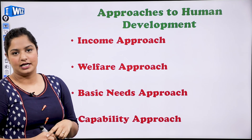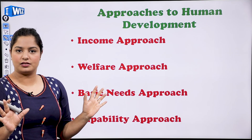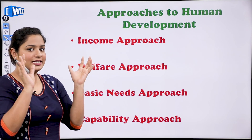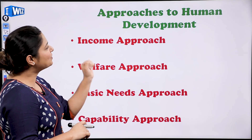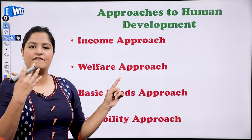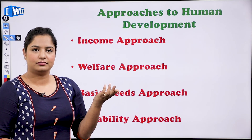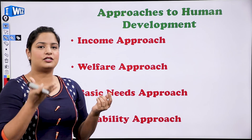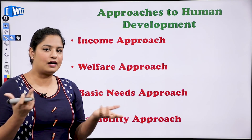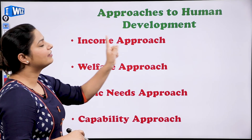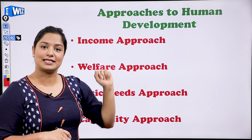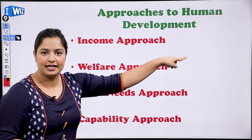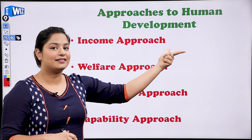Approaches to human development — there are four major approaches. The first one is the income approach. Very simple: if my income is 50 rupees versus 1000 rupees, with 1000 rupees I can buy more things. So more income means more choices. More income means more development — I can go to hospital, eat good food, take a good job, get good education.